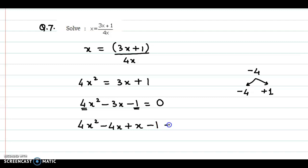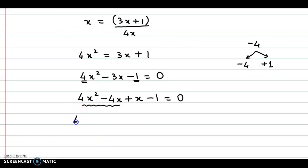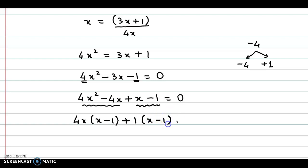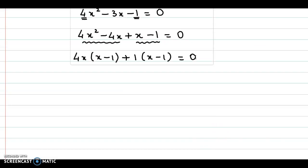And minus 1 is equal to 0. Now from the first and second terms, 4X is the common factor, so in brackets we have X minus 1. Now from the third and the fourth terms, we could take 1 as the common factor, so in brackets we have X minus 1 is equal to 0. So we have two factors: the first one is X minus 1 and the second one is 4X plus 1, equal to 0.